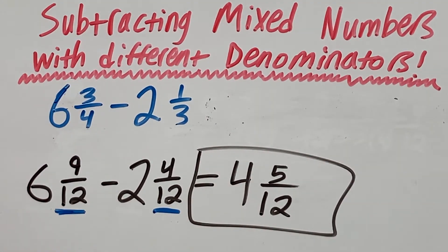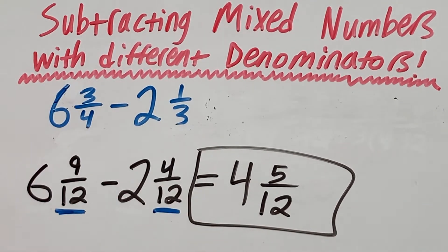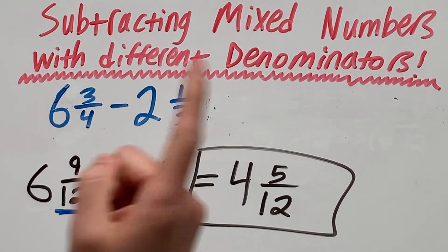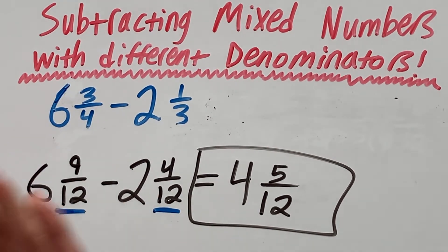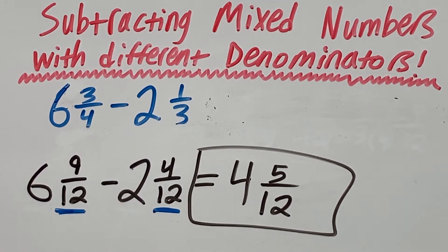And that's how you subtract mixed numbers with different denominators. Before you go, it should be noted that this is just one way of how to do this. The second method involves converting these mixed numbers to improper fractions and then subtracting those, which people generally find easier.